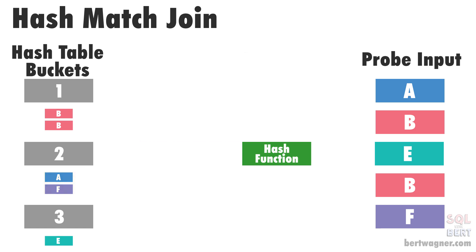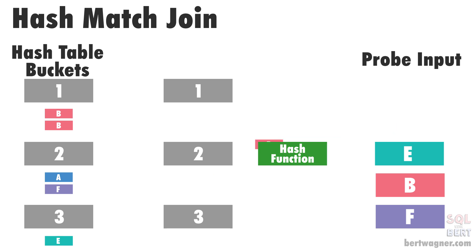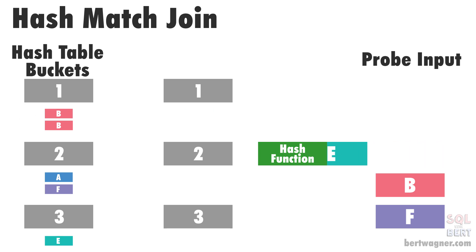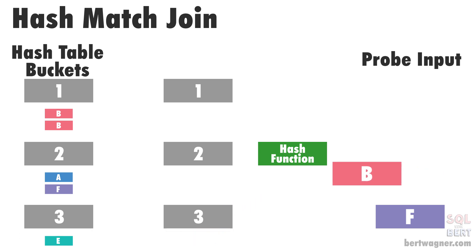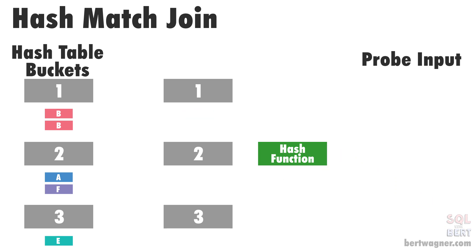Once the hash table is built, SQL Server begins the probe phase of the hash match join. During this second phase, SQL Server calculates the join key hash for each row in the second input and checks to see if it exists in the hash table created in the first build phase. If it finds a match for that hash, it doesn't stop there — it then has to verify if the join keys themselves actually match. This is because of that hash collision problem we talked about earlier; SQL Server can't be certain that just because the hashes match, the join keys themselves actually match, so it has to check that one more time.